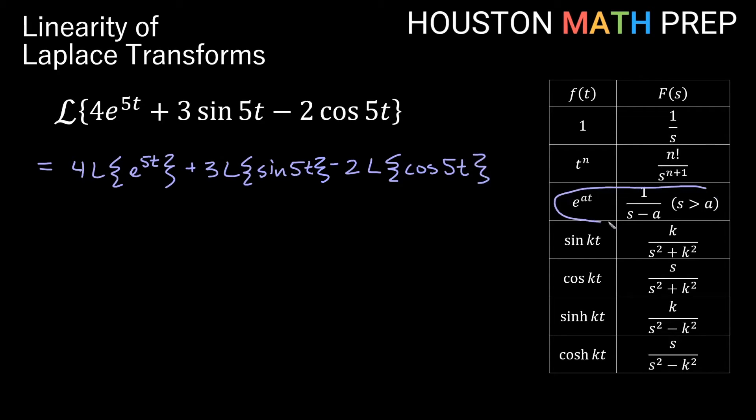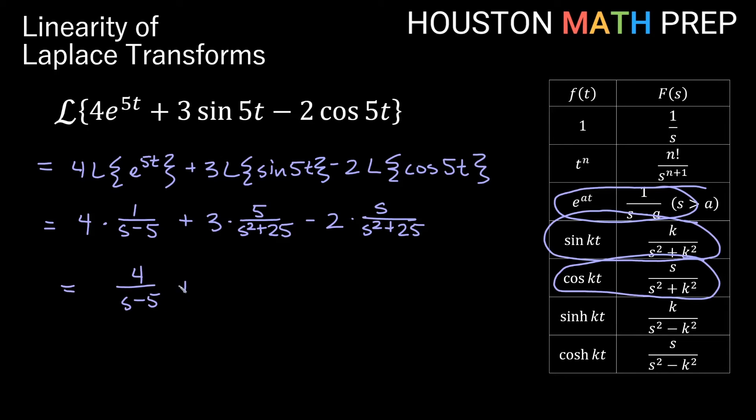E to the 5t here, we'll be using this one here with a equal to 5, so that will give us 4 times 1 over s minus 5 plus 3 times sine of 5t. We'll be using sine kt with k equal 5, so that will actually be k would be 5 over s squared plus k squared would be s squared plus 25 minus 2 times the Transform of cosine 5t. We'll use our cosine kt here with k equals 5 again. Cosine will actually have s on the top over s squared plus k squared becomes s squared plus 25. And so here we get 4 over s minus 5 plus 15 over s squared plus 25 minus 2s over s squared plus 25. And of course, if you'd like to combine these last two or make one big fraction in general, you can, but we'll go ahead and stop there.